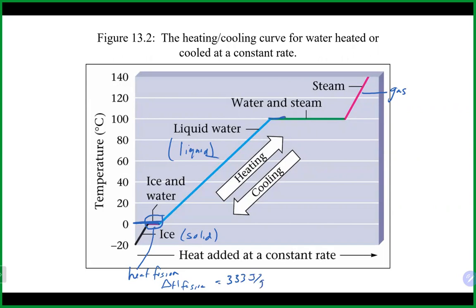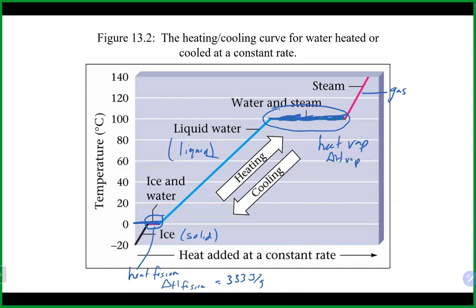At 100 degrees Celsius, there is another flat plateau — the normal boiling point for water. The temperature is not changing through that transition. At exactly 100 degrees Celsius, both liquid and gas phases are happening simultaneously. It's not until above 100 degrees that you fully transition into the gas phase. That plateau is where we would have our heat of vaporization — delta H of vaporization — of 2260 joules per gram for water, positive or negative depending on which direction you're going.